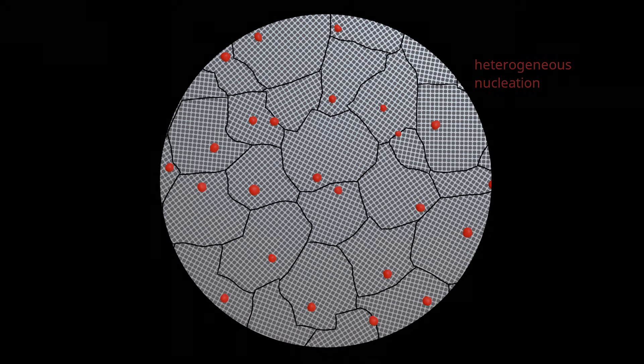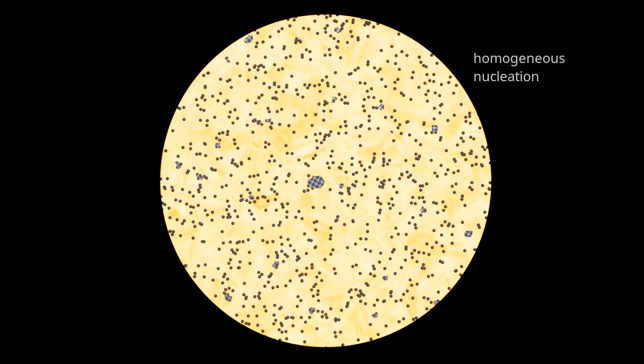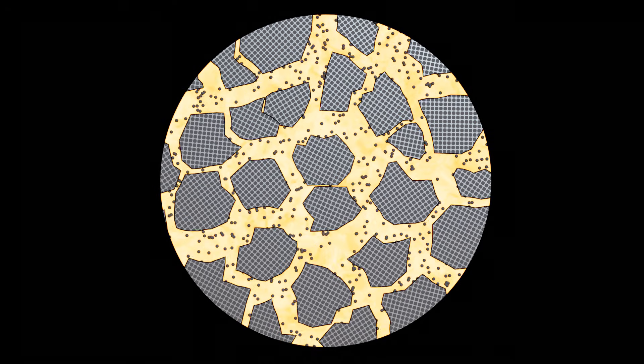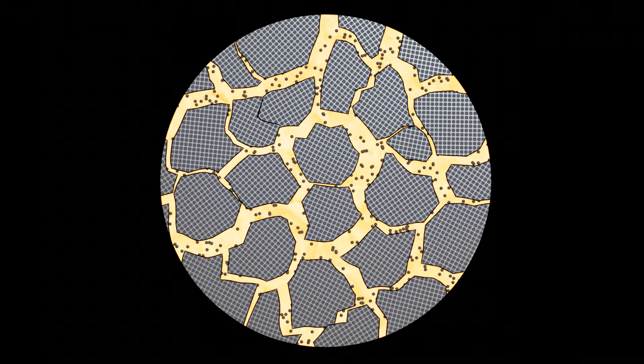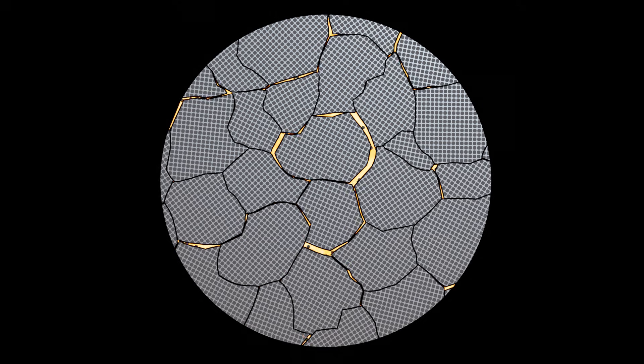However, not only foreign particles, but also the particles of the molten material can serve as nuclei. In this context, one speaks of homogeneous nucleation. Homogeneous nucleation can be caused, for example, by the random arrangement of atoms in the melt in the form of a unit cell. Due to the large number of particles in a melt, this is not as unlikely as it may sound. Homogeneous nucleation can also be caused by unmelted residues, but this is unlikely in molten metals. The probability of a random arrangement of atoms in the form of a lattice structure is homogeneously distributed throughout the melt. Thus, there are no preferred locations for the particles to come together. Therefore, this type of nucleation is called homogeneous nucleation.